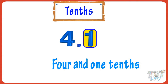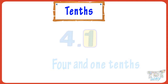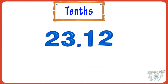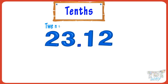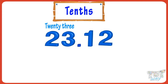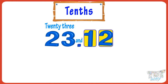Now let's take another example. Here we have two digits after the decimal. The number before the decimal is the whole part — it is named as it is. The decimal is named as 'and,' so the name becomes twenty-three and. Now we have two digits after the decimal.